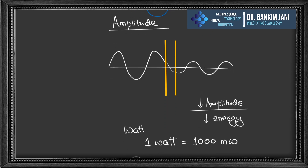Decreasing the amplitude means decreasing the energy. When waves pass through an obstacle like a wall, there is a decrease in amplitude. This is exactly what happens when our access point is in one room — we get a good signal — but when we move to another room, the signal strength decreases because the amplitude is lower.